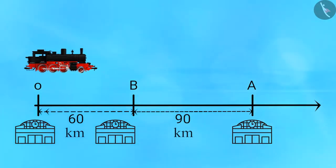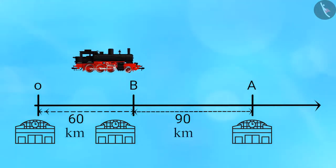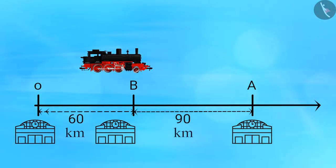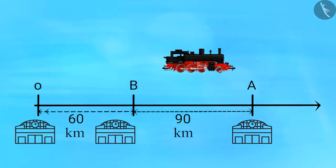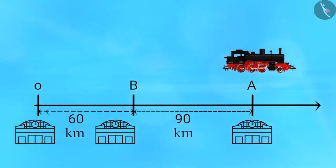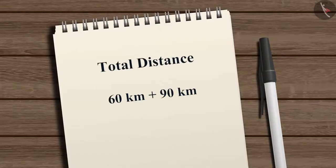From station B, it travels 90 kilometers to finally reach station A. Now, can you tell what is the total distance traveled by the train? The total distance traveled by the train is 60 kilometers plus 90 kilometers, that is 150 kilometers.